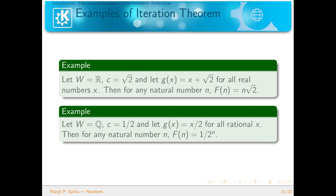Another example: if W is the set of rational numbers Q, C = 1/2, and G(x) = x/2 for all rational x, then for any natural number n, F(n) = 1/2^n. This example can be done similarly to the previous one, and I leave it to you as an exercise.